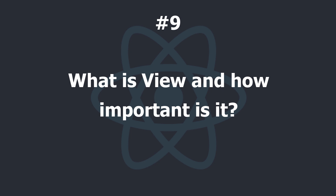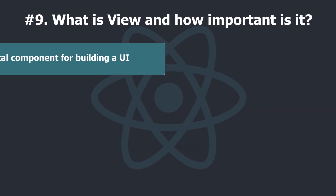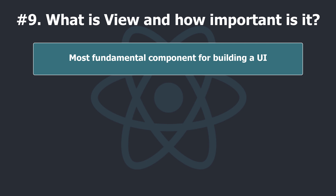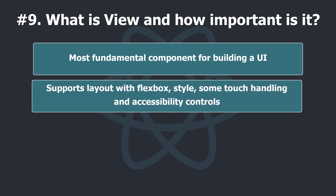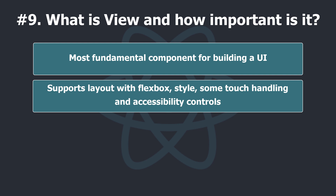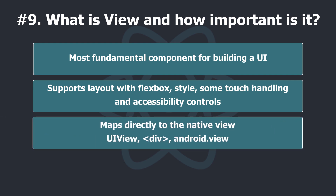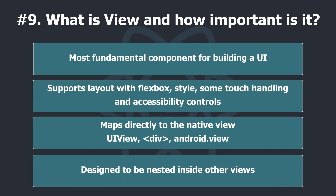What is View and how important is it? View is the most fundamental component for building a UI in React Native. View is a container that supports layout with Flexbox, style, some touch handling, and accessibility controls. View maps directly to the native view equivalent on whatever platform React Native is running on, whether that is a UIView, div tag, android.view, etc. View is designed to be nested inside other Views and can have zero to many children of any type.